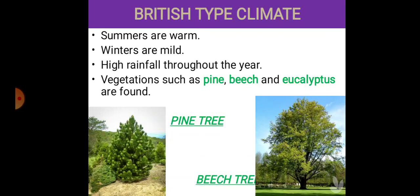The British-type climate region features warm summers, mild winters, and high rainfall throughout the year. The vegetation found in this region includes pine, beech, and eucalyptus.